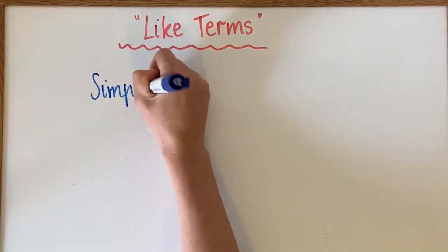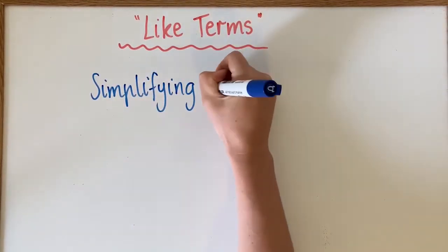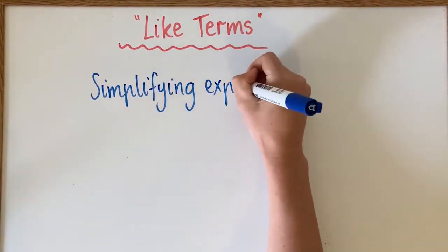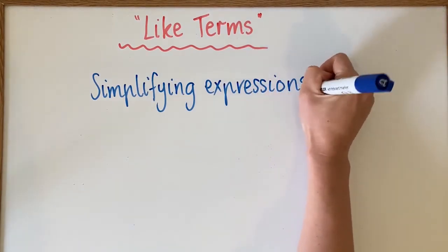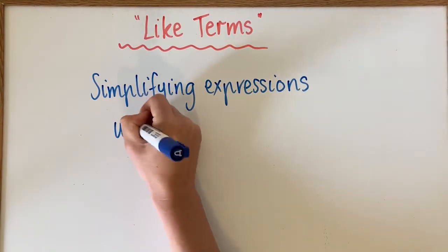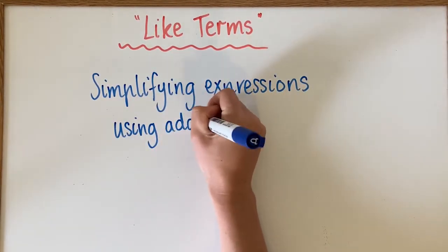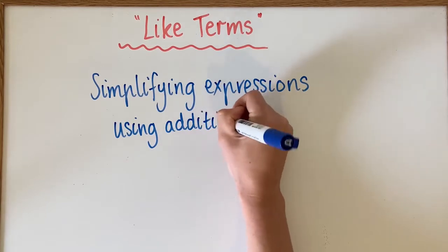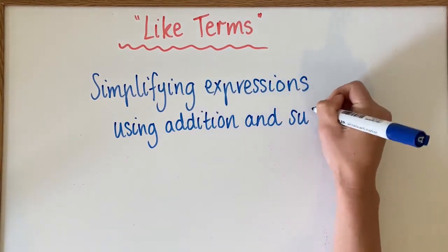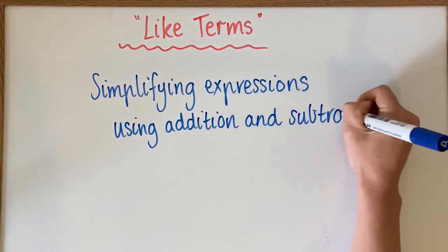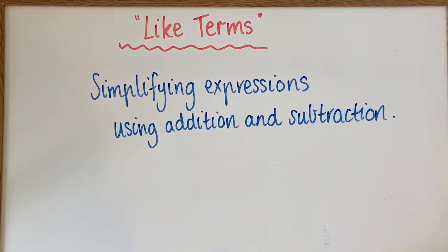Like terms is a method that we use for simplifying expressions and equations using addition and subtraction. What we need to find is terms that are like, that are similar, and then we can combine them using addition and subtraction.